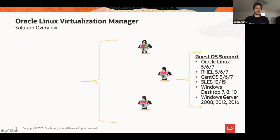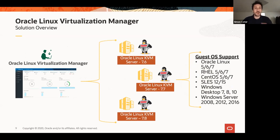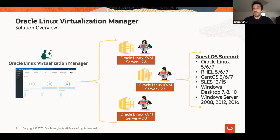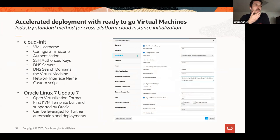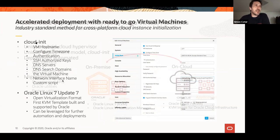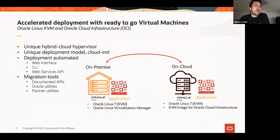OLVM can manage Oracle Linux KVM servers running Oracle Linux 7.6, 7.7, and 7.8. Supported guest operating systems include Enterprise Linux releases 5, 6, and 7; SUSE Enterprise Linux 12 and 15; and all currently supported Windows desktop and server releases including Windows Server 2019, which is also available with OLVM 4.3.